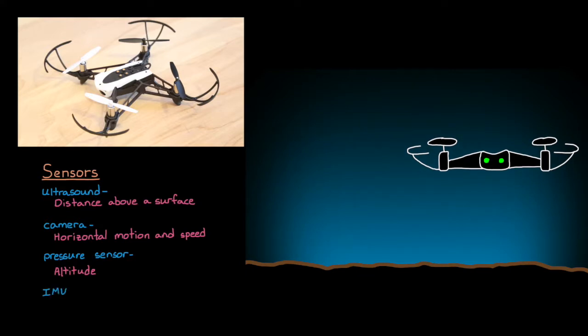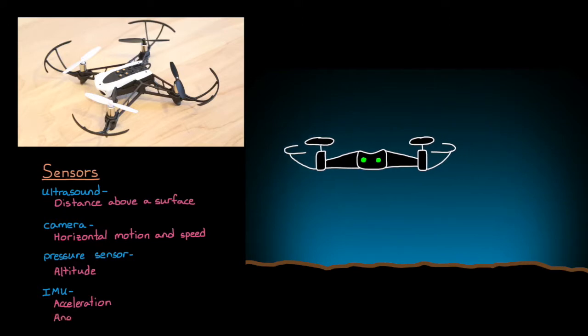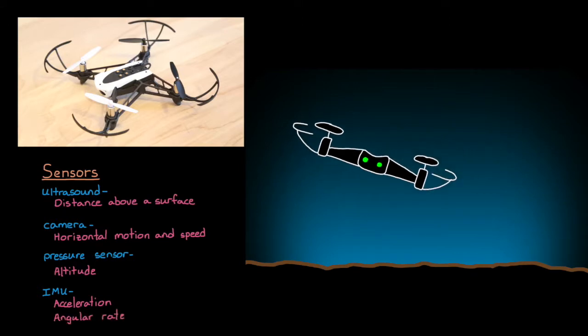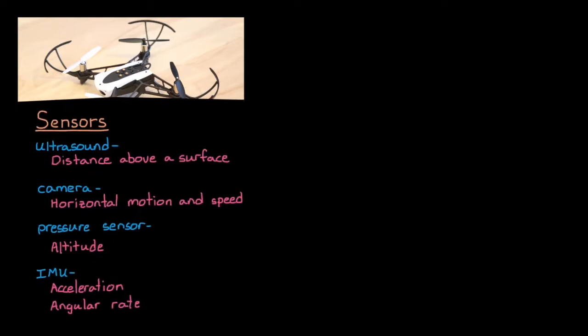The last sensor is an inertial measurement unit, or IMU for short. This is made up of a 3-axis accelerometer, which measures linear acceleration, and a 3-axis gyroscope that measures angular rate. From the IMU and our knowledge of acceleration due to gravity, we can estimate the mini drone's attitude relative to gravity and how fast it's rotating.